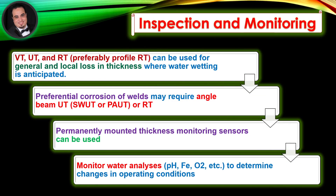Inspection and monitoring: VT, UT, and RT — preferably profile RT — can be used for general and local loss in thickness where water wetting is anticipated. Preferential corrosion of welds may require angle beam UT, SWUT, PAUT, or RT. Permanently mounted thickness monitoring sensors can be used. Monitor water analyses: pH, Fe, O2, etc., to determine changes in operating conditions.